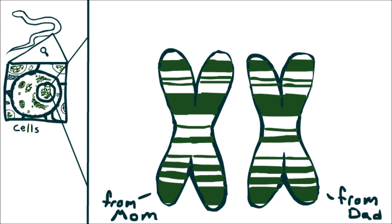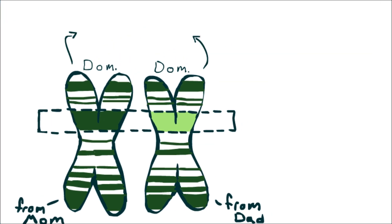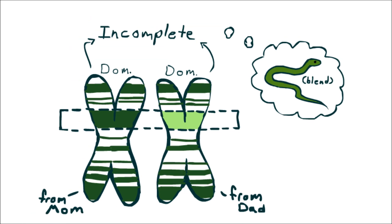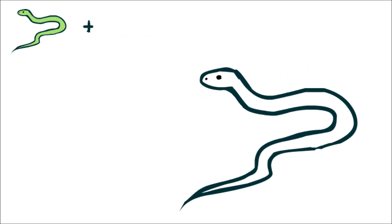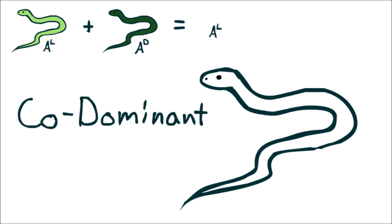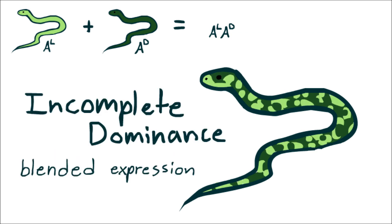Let's go back to the chromosomes for a second. Here we have an organism with two different alleles for the same gene, one dominant and one recessive. But what if both were dominant? Well, a few different things can happen, but in this case we observe an interaction of either codominance or incomplete dominance. This means that in a heterozygous individual, neither trait can mask the other, so both are expressed. Traits that are codominant both express fully, while incomplete dominant traits express as a blend of the two.